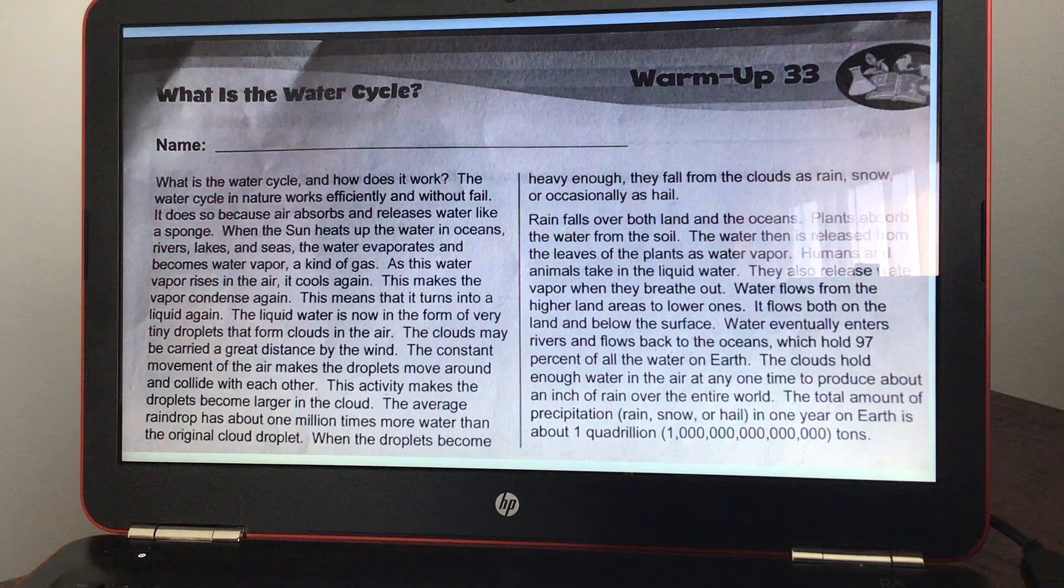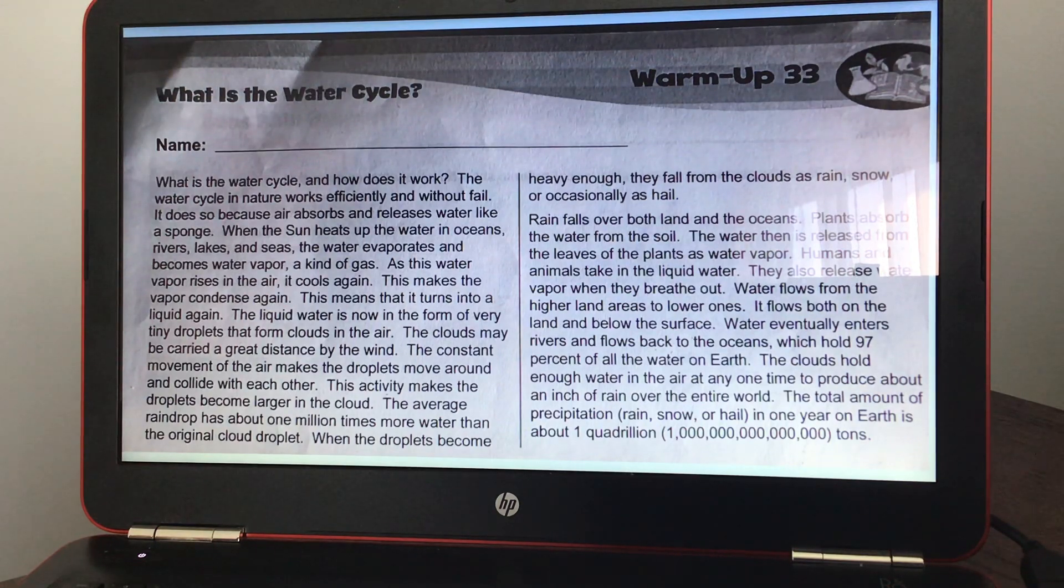Water flows from the higher land areas to lower ones. It flows both on the land and below the surface. Water eventually enters rivers and flows back to the oceans. The oceans hold about 97% of all the water on Earth. The clouds hold enough water in the air at any one time to produce about an inch of rain over the entire world.